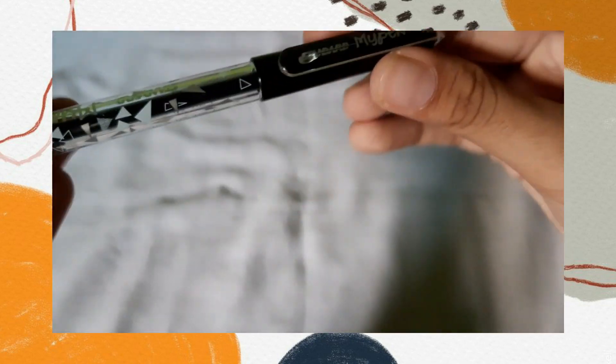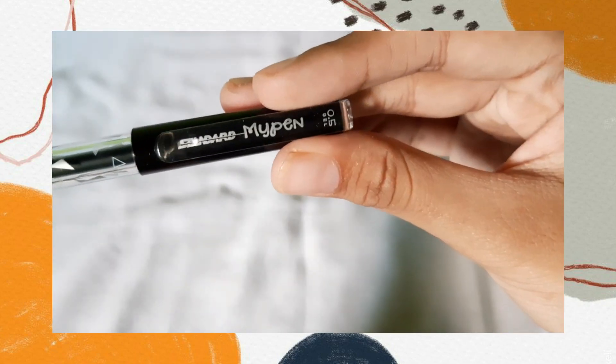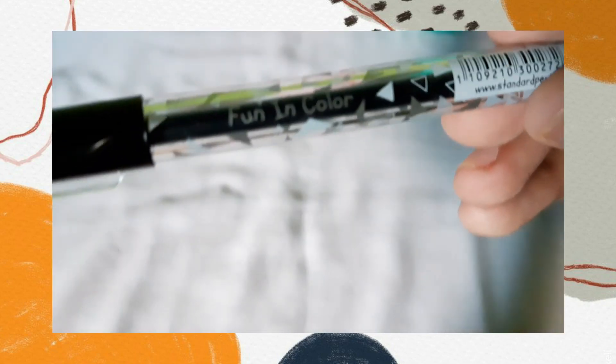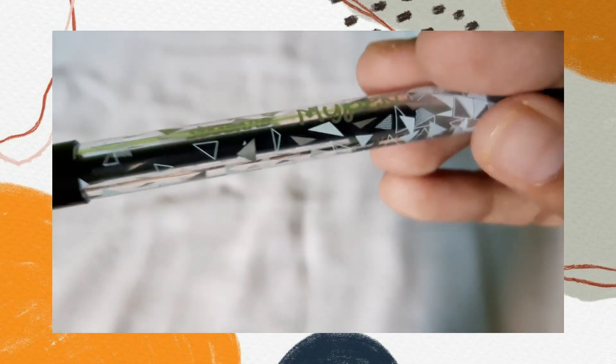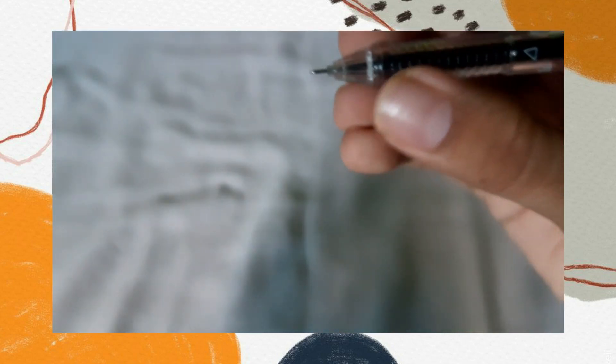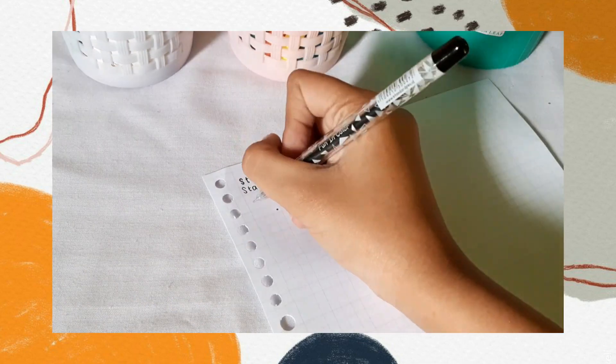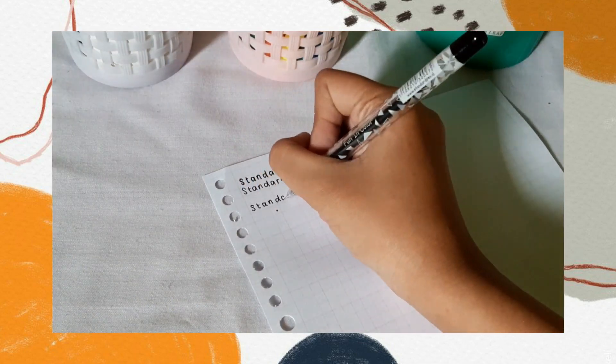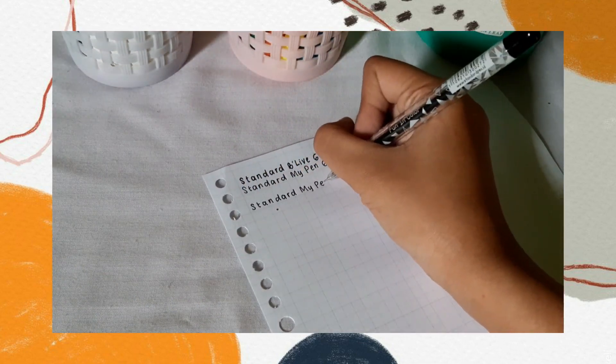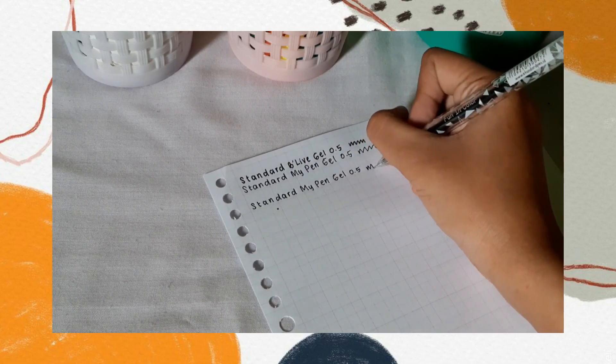Kita lihat lagi detailnya. Jadi, body pennya tuh kayak pulpen yang biasa kita pakai di kelas. Kelas sekolah gitu. Tapi ini cute banget sih, dan dipegang juga tetap nyaman walaupun gak ada grip karetnya. Pas di swatch, tintanya memang gak sebel kayak yang tadi, tapi ini gak mancet-mancet juga kok.